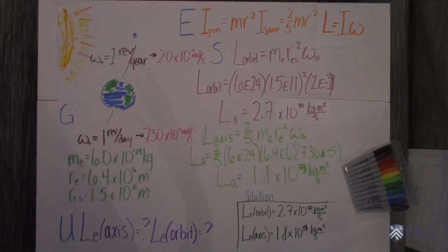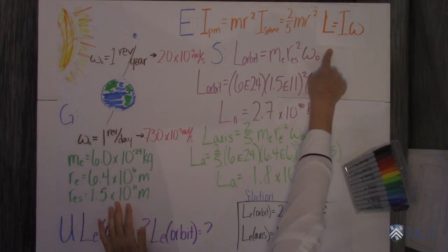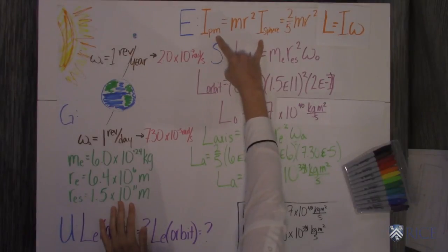And then we know that the question is asking for the angular momentum of the Earth spinning on its axis and the angular momentum of the Earth in its orbit. So the things that we want to know, the equations that we want to use, we want to use angular momentum equals I omega.